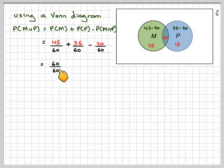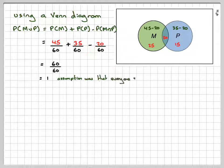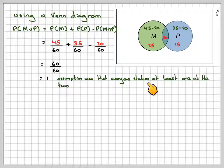So we're going to subtract 20 out of 60. That gives me 60 out of 60, which gives me 1, which is right, because everybody at least studies one subject in this problem.